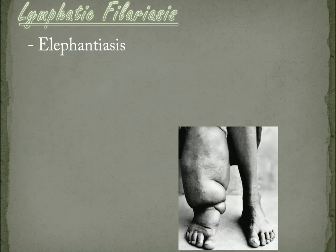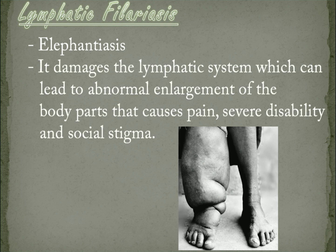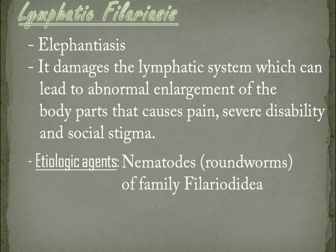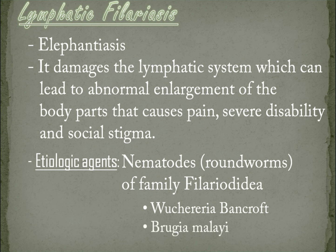Lymphatic filariasis, also called elephantiasis. It damages the lymphatic system, which can lead to abnormal enlargement of body parts, causing pain, severe disability, and social stigma. Etiologic agent. Lymphatic filariasis is caused by infection with parasites classified as nematodes of the family Filarioidea. There are three types: Wuchereria bancrofti, which is responsible for 90% of cases, Brugia malayi, and Brugia timori. Adult worms nest in the lymphatic vessels and disrupt the normal function of the lymphatic system.